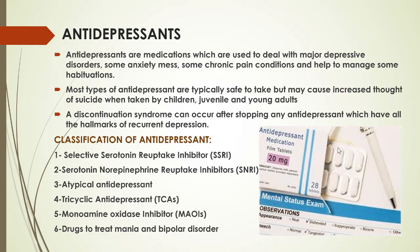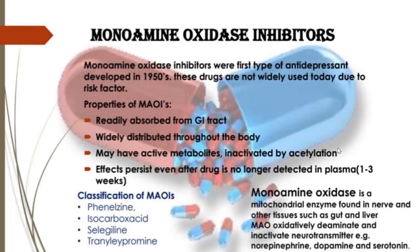Monoamine oxidase is a mitochondrial enzyme found in nerve and other tissues such as the gut and liver. Monoamine oxidase deaminates and inactivates neurotransmitters — for example, norepinephrine, dopamine, and serotonin. Monoamine oxidase inhibitors were the first type of antidepressant developed, in the 1950s. These drugs are not widely used today due to many risk factors.